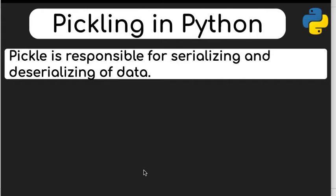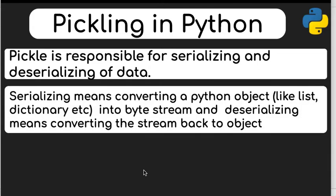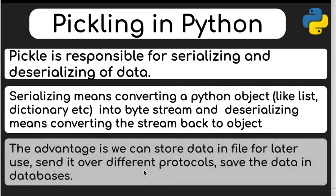Serializing is the process where data from your Python object — whatever is stored in a list or a tuple — is converted into a byte stream and then stored for future use on your hard disk inside a file. When we turn the byte stream back into a Python object, we call it deserializing.